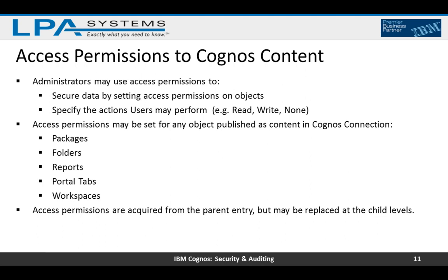Administrators may use access permissions to secure data by setting permissions on objects and specifying the actions users may perform — whether read, write, traverse, or none. Access permissions are applied on objects published as content in Cognos Connection: packages, folders, reports, portal tabs, and workspaces. Permissions are acquired from the parent entry but may be overridden at child levels, giving you granular control.